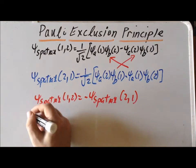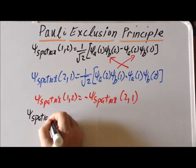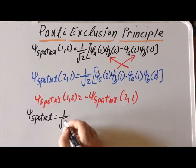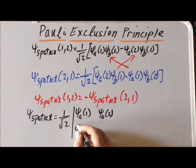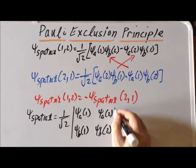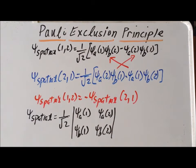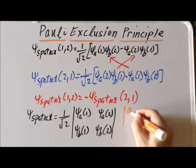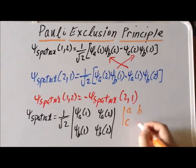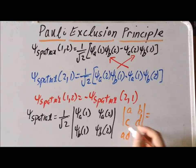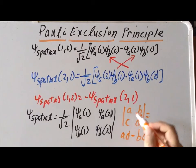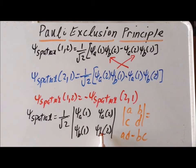We can conveniently write the spatial part of the wave function as a determinant: one over the square root of two times the determinant with psi_a(1) and psi_b(1) in the first row and psi_a(2) and psi_b(2) in the second row. Using the property of determinants — that a two-by-two determinant with entries a, b, c, d equals ad minus bc — this gives us psi_a(1) psi_b(2) minus psi_a(2) psi_b(1), exactly our proposed spatial wave function.